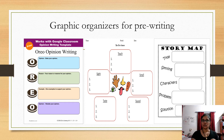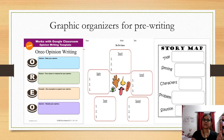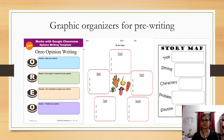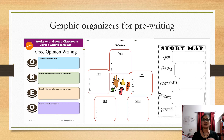Last year you learned six genres of writing: descriptive, persuasive, narrative, creative, expository, and report writing. Each genre has a different pre-writing graphic organizer. For example, this year in the first unit we are learning persuasive writing, so we will use the OREO concept for pre-writing. If you are describing something, you use the sensory organizer based on the five senses — mainly used for descriptive writing. For a story, you use a story map: title, setting, characters, problem, and solution.